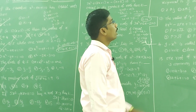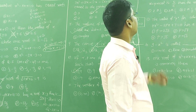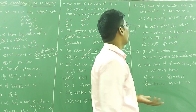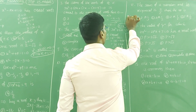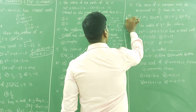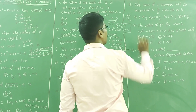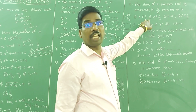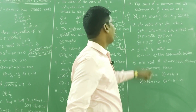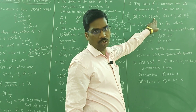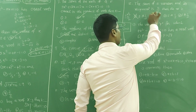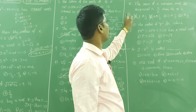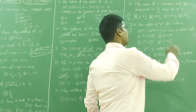The sum of a number and its reciprocal is 5/2 — find the number. Using the options method: if x = 2, then 2 + 1/2 = 5/2. But also check 1/2: 1/2 + 2 = 5/2. So the third option, which is 2 or 1/2, is the correct answer.